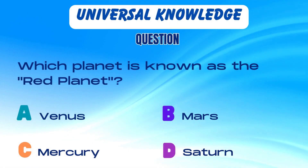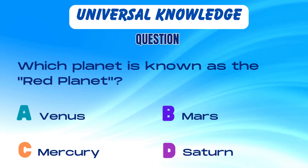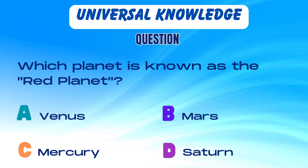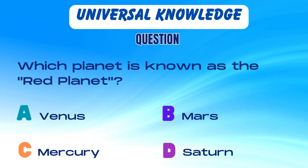Which planet is known as the red planet? Is it A. Venus, B. Mars, C. Mercury, or D. Saturn?